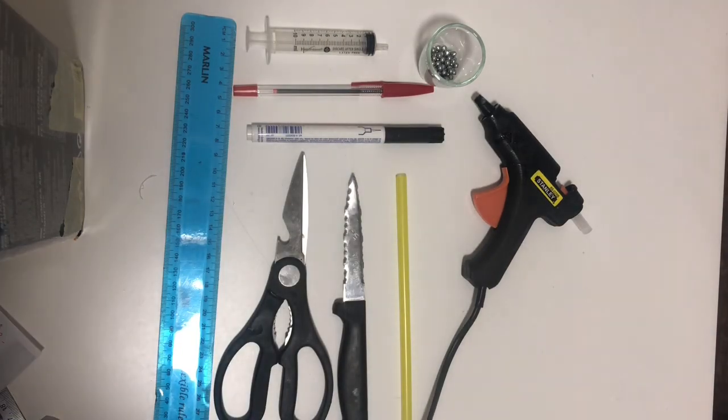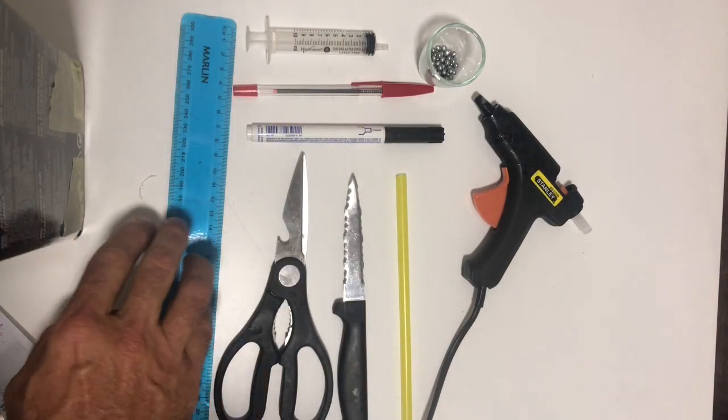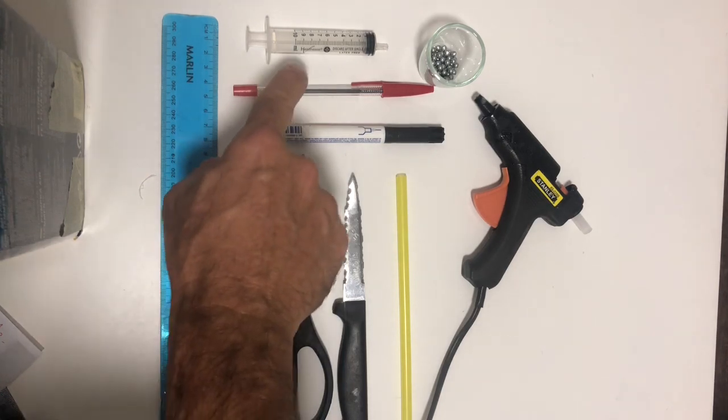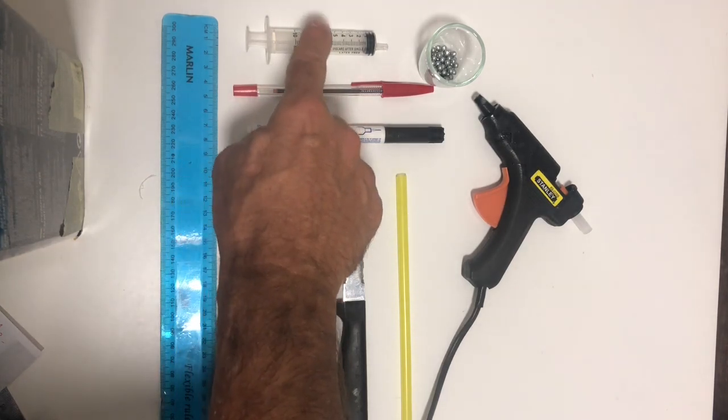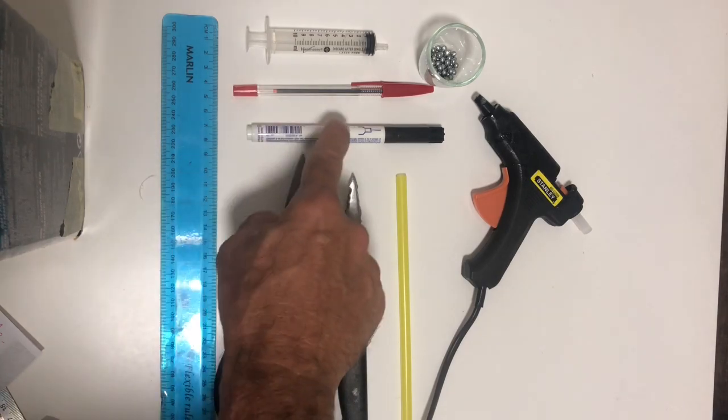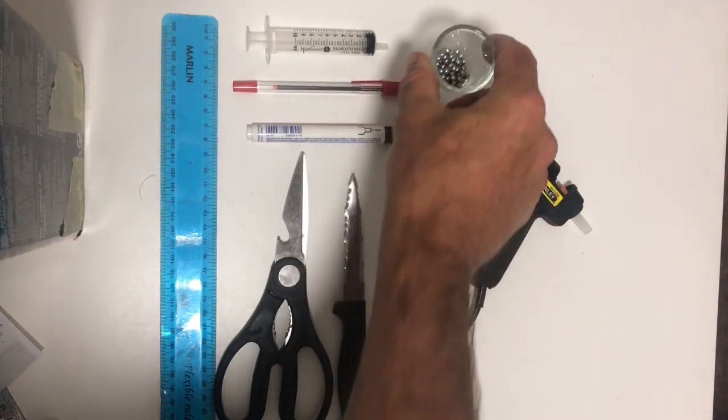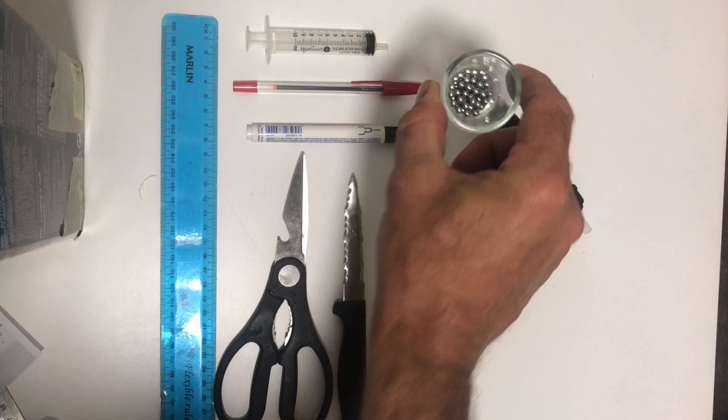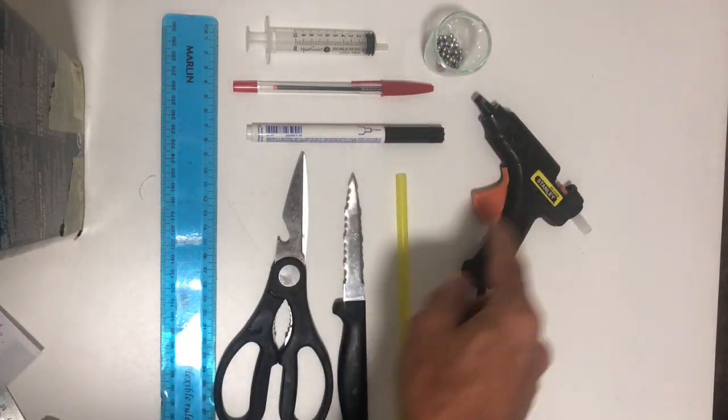For this maker hydrometer you're going to need a clear ruler, a 10 millimeter syringe, a pen (you're going to only use the cap from the pen), a marker pen, some BB ballast (these are just BB pellets), a hot glue gun, a straw, a craft knife, and some scissors.